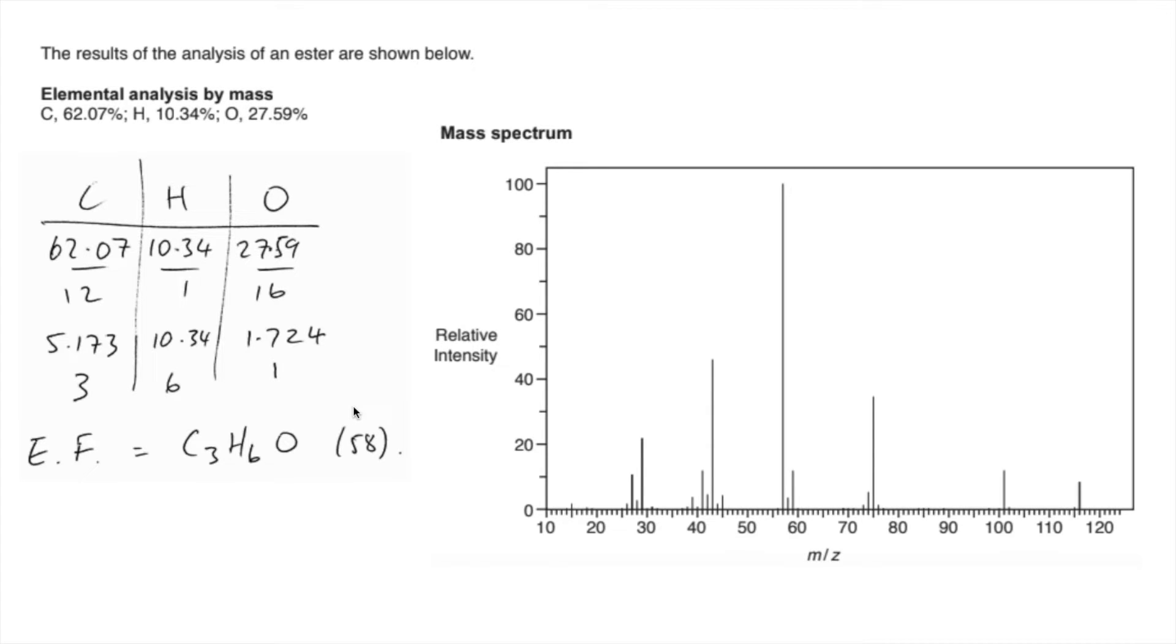And then we're going to compare that to the MR of the molecule, which we can get from the peak furthest to the right in the mass spectrum. So the MR is 116, so you can see that needs to be doubled. Therefore the molecular formula is C6H12O2.